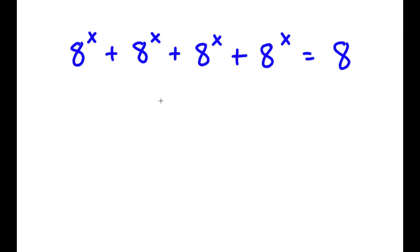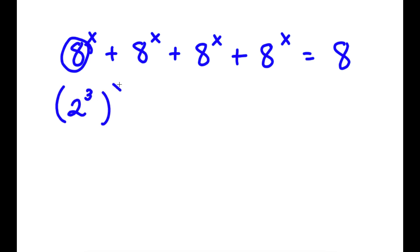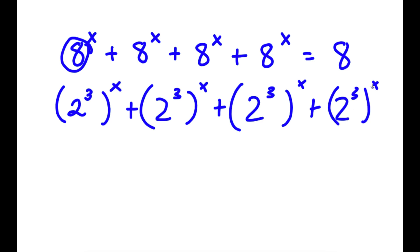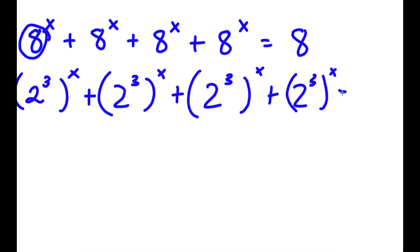To solve this, I'm going to first start by replacing 8 with 2 to the power of 3. So now I have 2 to the power of 3 to the power of x, four times, is equal to 2 to the power of 3.